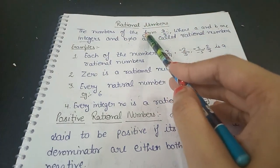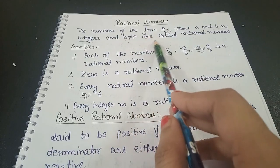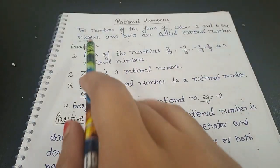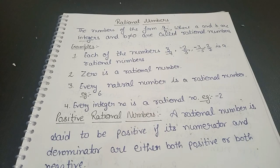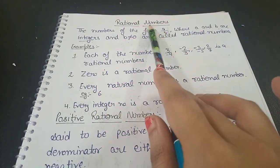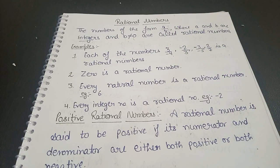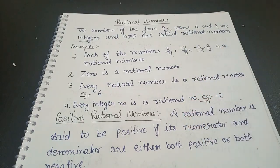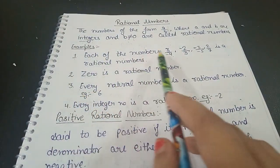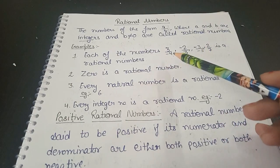What is a rational number? Numbers of the form a/b, where a and b are integers and b is not equal to zero, are called rational numbers. We already studied integers in our previous chapter — positive natural numbers, negative natural numbers, and zero are all integers. For example, 3/(-4), (-2)/3, (-3)/(-5), and 2/7 are all rational numbers.